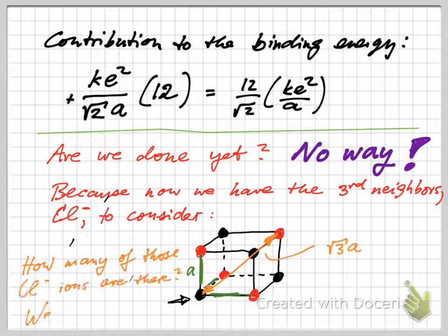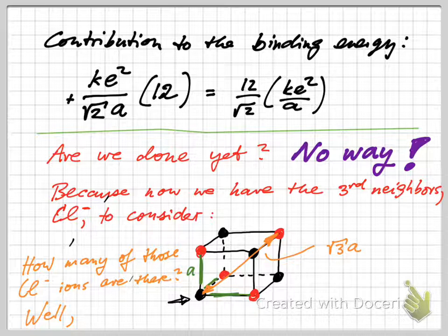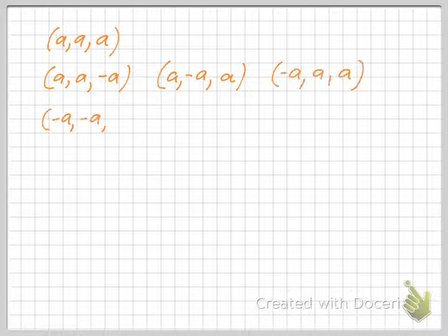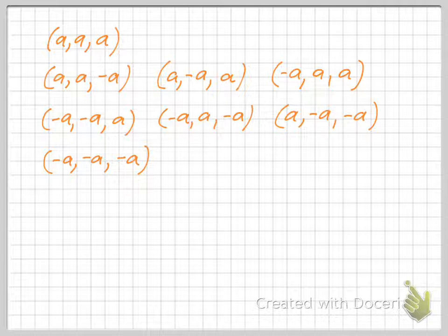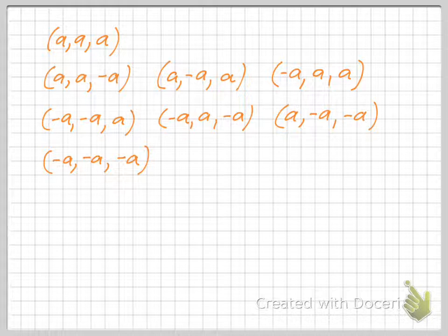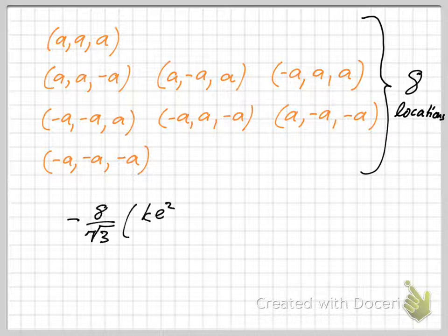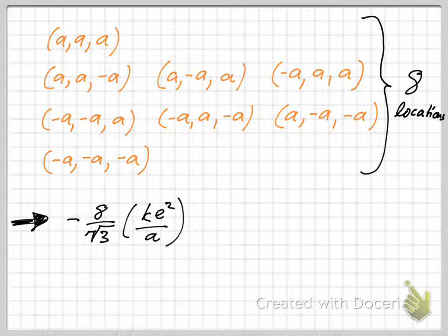That is another chlorine ion at the sort of opposite corner of that cube, and so that distance is the square root of three times a. Now how many of those ions are there that are that far away from the center ion? You can sort of count them all up. Basically we get all of those coordinates. Let's say the central sodium ion is at the origin, then all of these coordinates would be square root of three times a away from the origin, and so there's eight locations here. Therefore the contribution to the binding energy is eight over, minus eight over the square root of three times quantity ke squared over a.